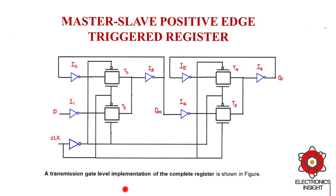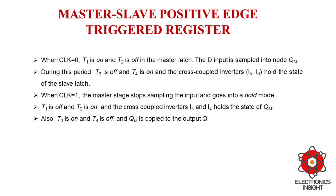This concludes the transmission gate implementation of the master-slave positive edge-triggered register. Kindly refer to the video on the implementation of a positive latch using transmission gate given in the description box below, and try to implement a negative latch using transmission gates. You can then use that concept to implement a master-slave configuration for a negative edge-triggered register, just by switching the master stage to a positive latch and the slave stage to a negative latch.